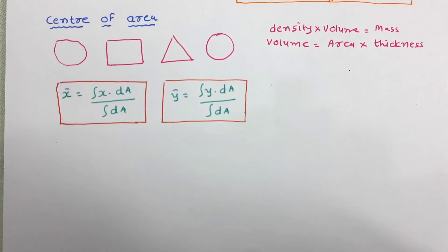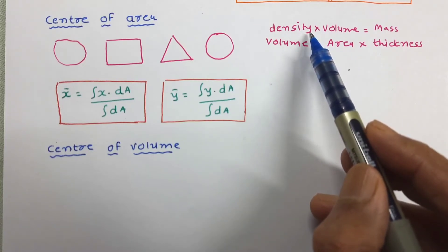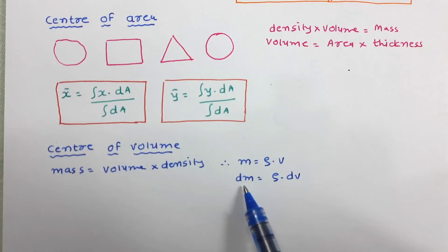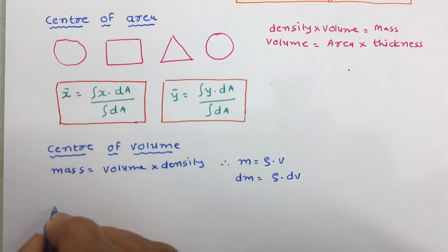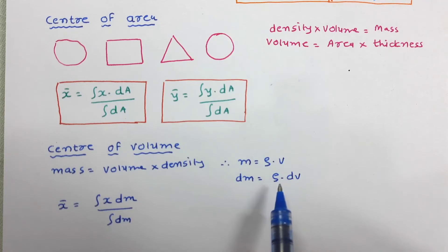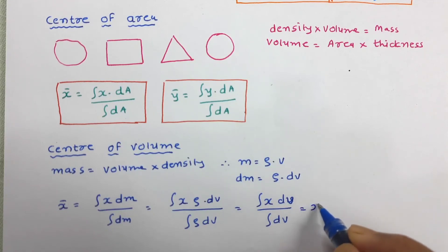Now let us learn the equation for center of volume. We know that mass is equal to volume into density, so we can write m equal to rho into v. For the mass of a small element we can write dm equal to rho into dv. Using the equation of center of mass and substituting dm with rho dv, since rho is constant it cancels from numerator and denominator, and we get x̄ equal to integration of x dv divided by integration of dv.